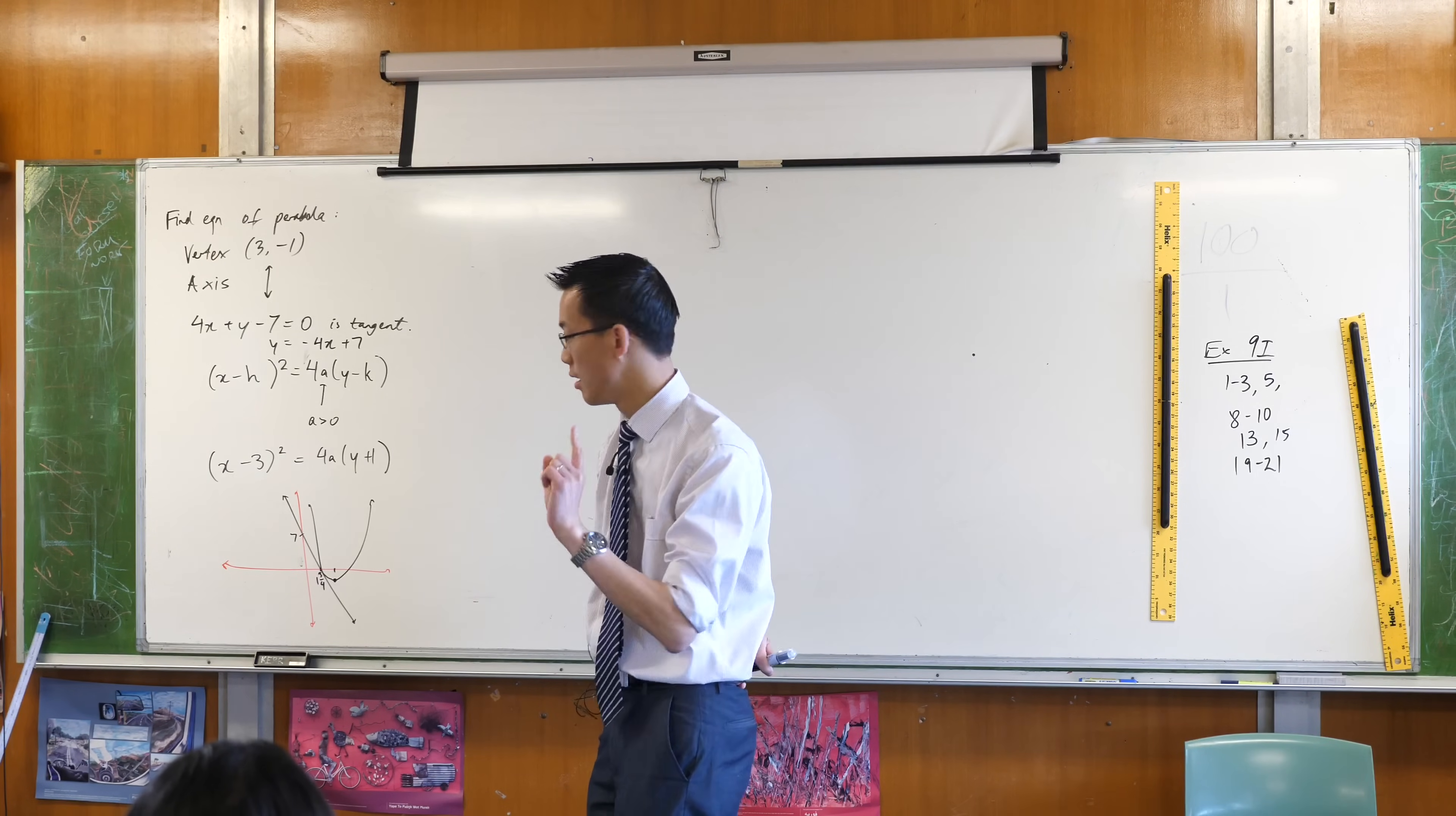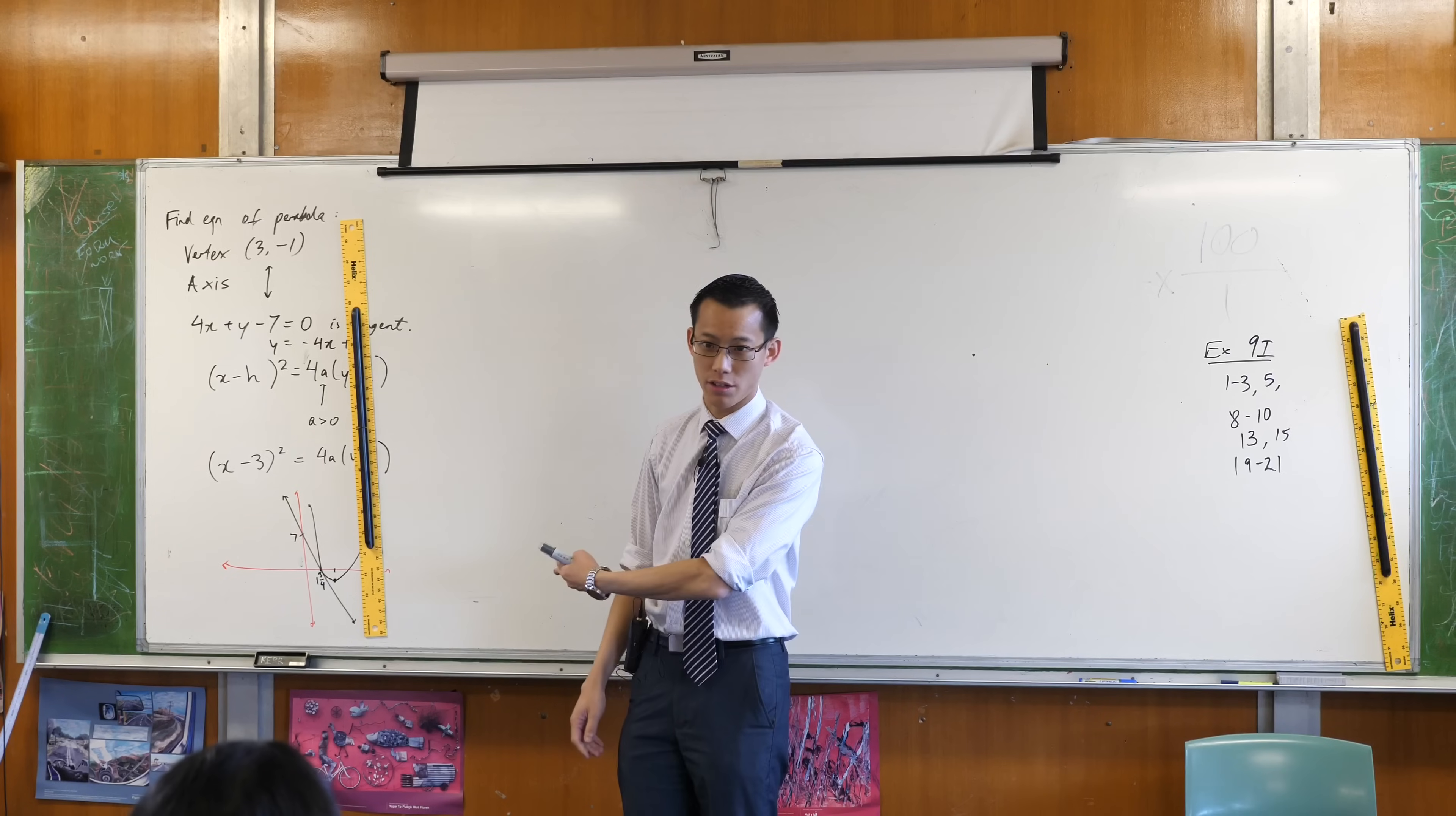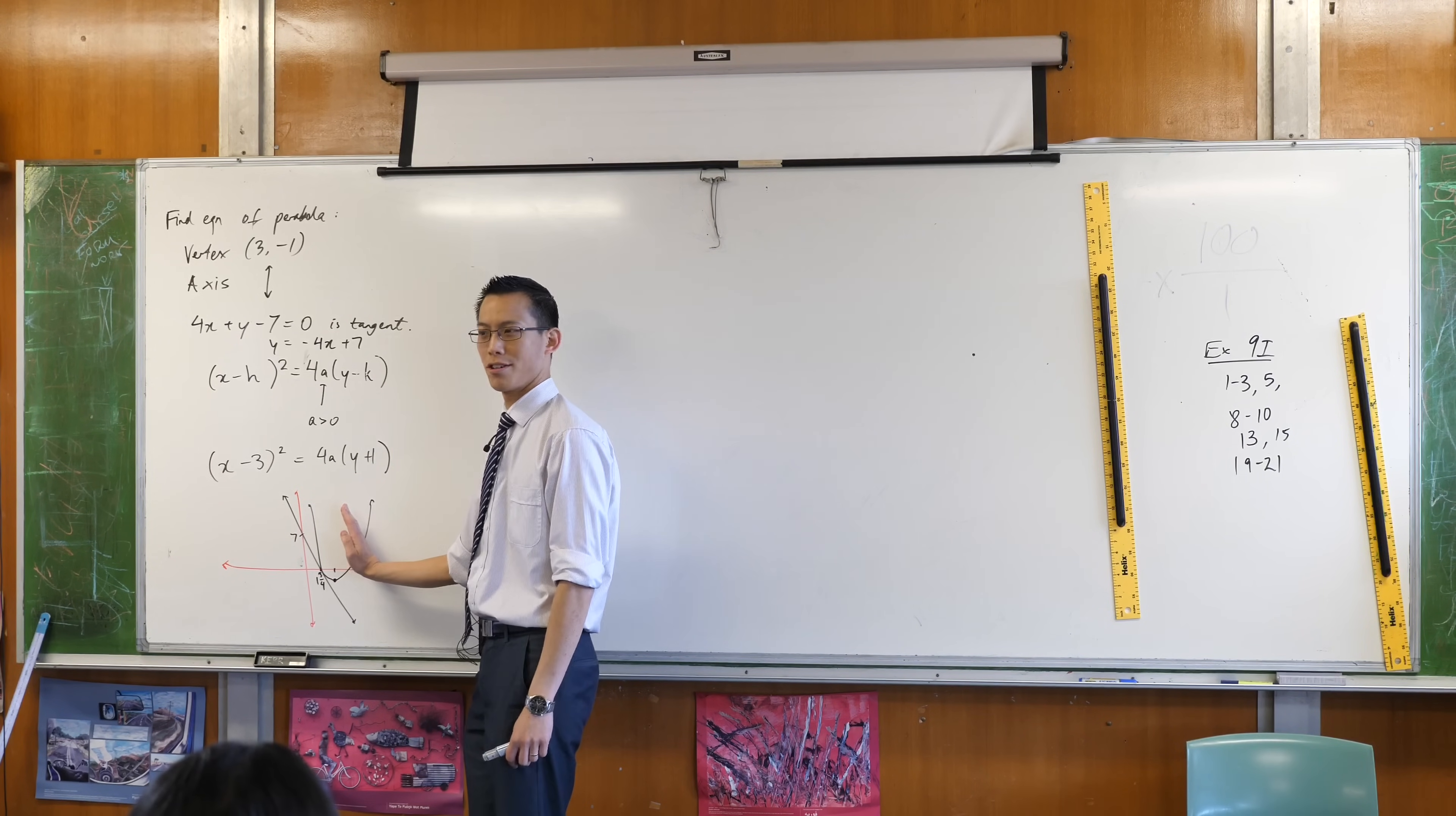It touches just once. You can be a bit more specific than that as well, right? Because I could draw a line like, say, this. If that were the line, it also touches just once. But it's clearly not a tangent. It just goes straight through. So what does it do in addition to just touching once? What is it that this line has that this line does not have, even though they both just touch once?